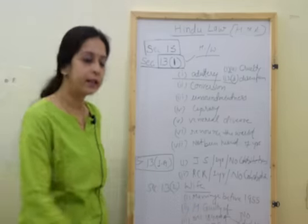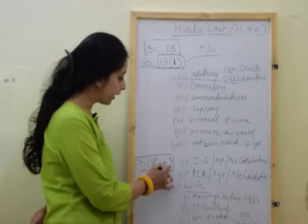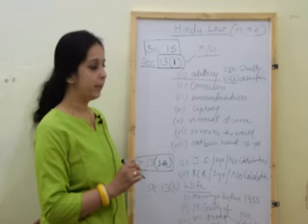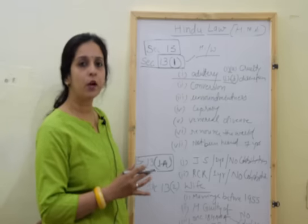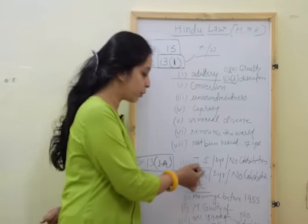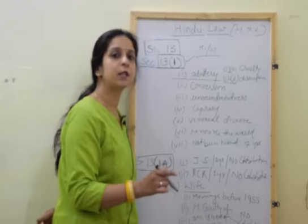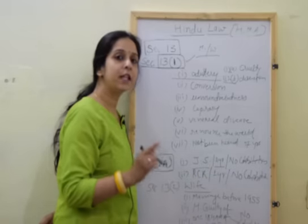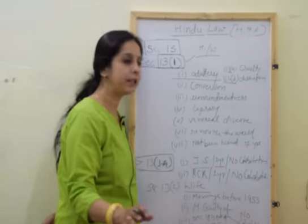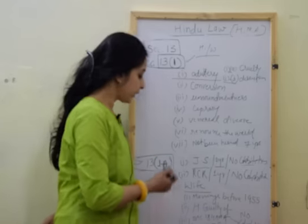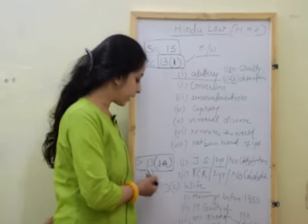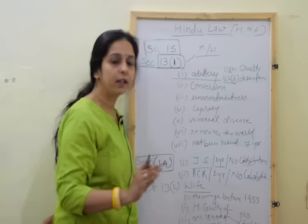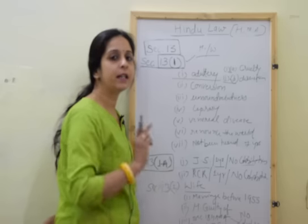Remember the specific provision: Section 13(1A). Most of the cases in the court are going on this particular ground. If under Section 10, a decree of judicial separation is passed by the court and there is no cohabitation between the parties after completion of one year, they can file a petition for divorce under Section 13(1A). Judicial separation — decree passed by the court, after completion of one year, no cohabitation between the parties — is a ground for divorce.